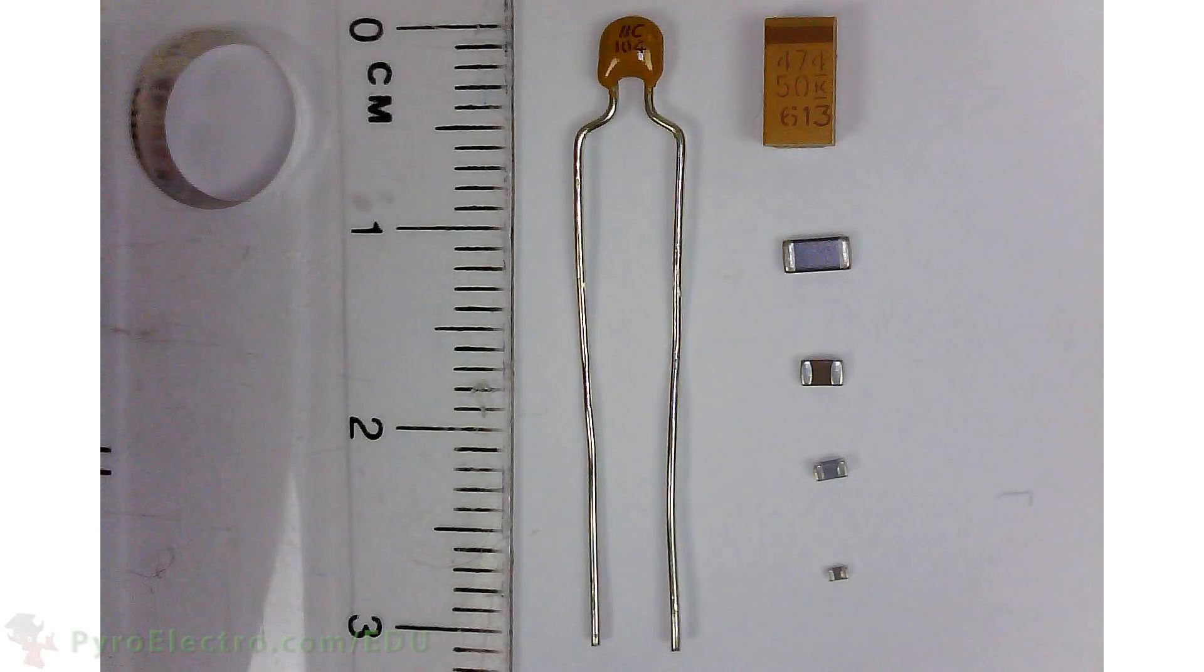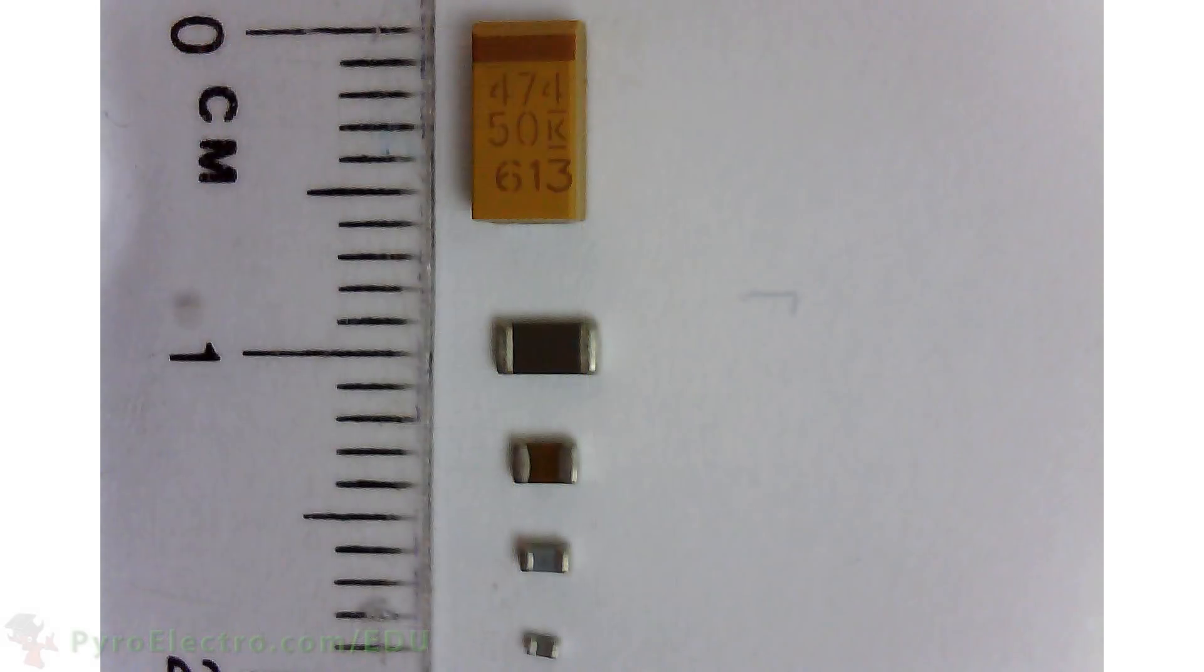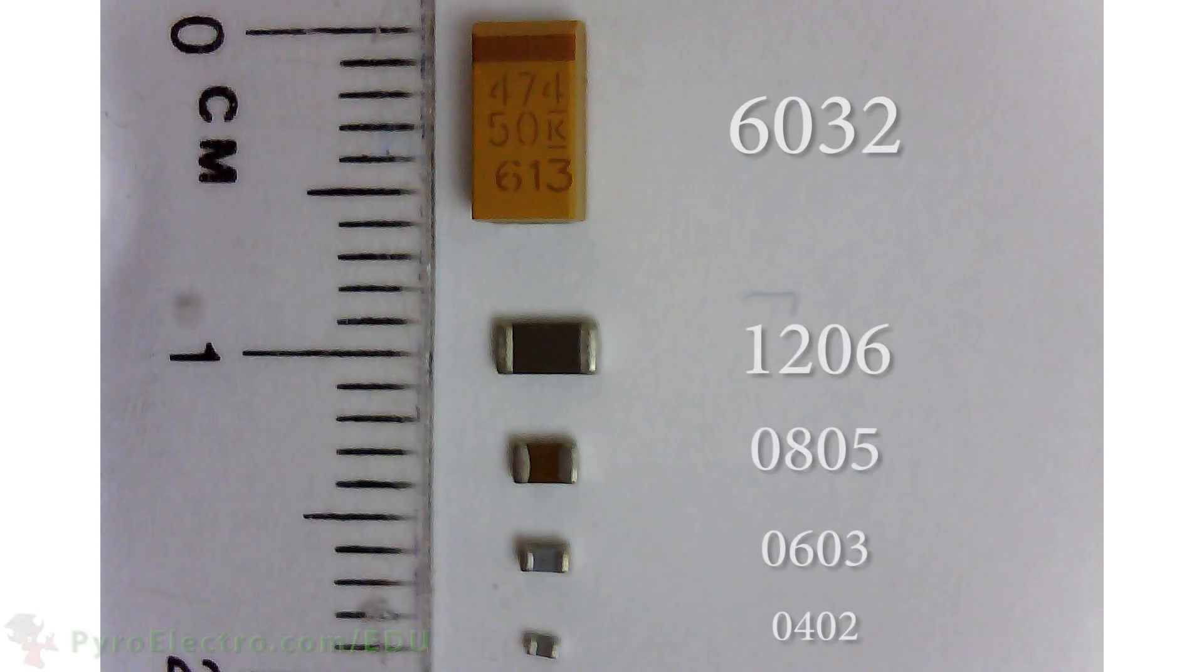If we take a closer look at the surface mount capacitors, we can't see any markings on them at all. Most surface mount capacitors do not have their value written on them, so you have to use a capacitance meter to find out what their value is. These five surface mount capacitors are all standard sizes. This one is called a 6032, because it is 6mm by 3.2mm. This one is called a 1206, and the last three are even smaller than that.